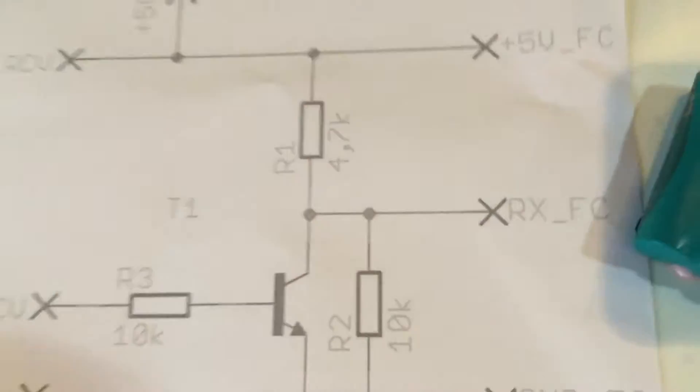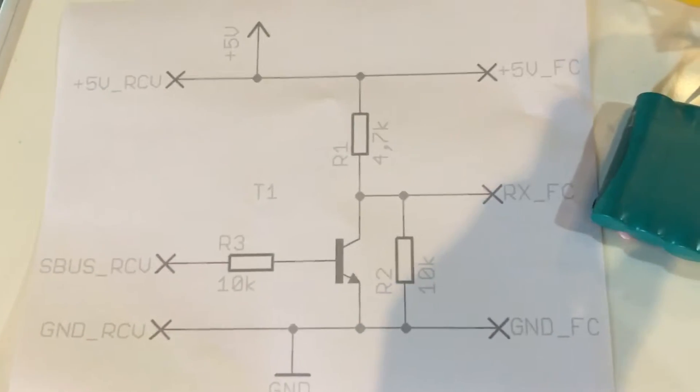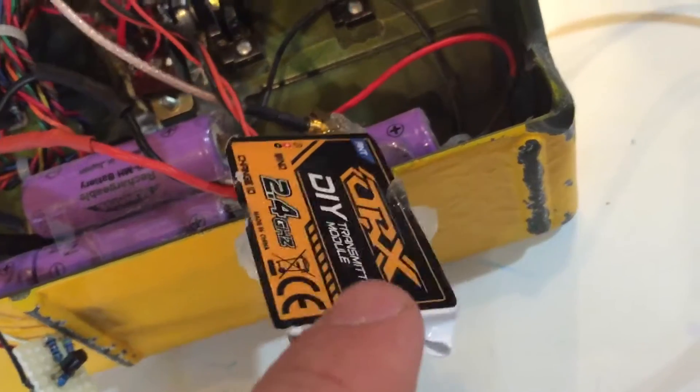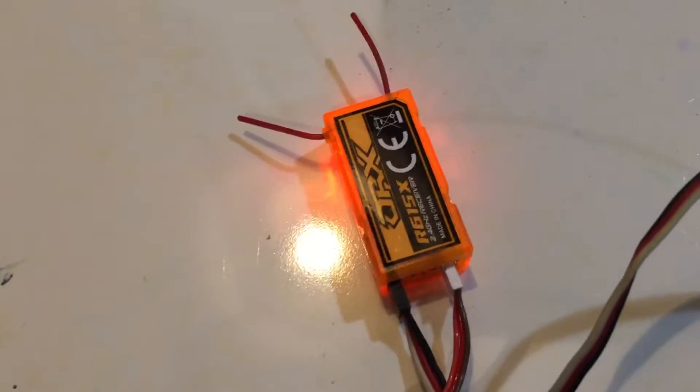I'll post some photos of that schematic. When I hook it up, it actually inverts the signal from the radio to the transmitter module, and I'm able to bind.